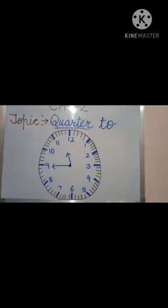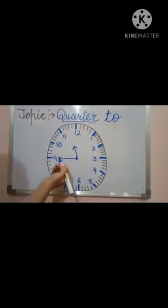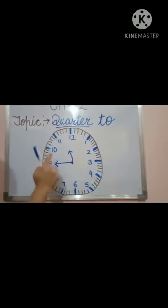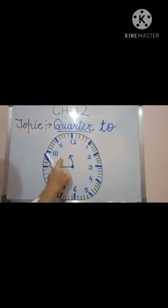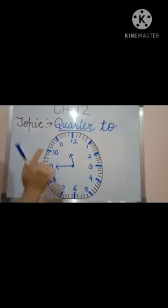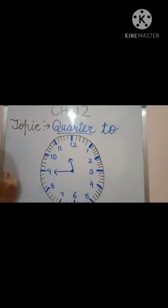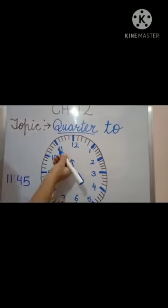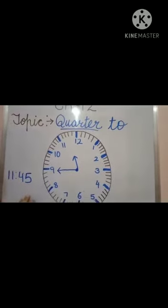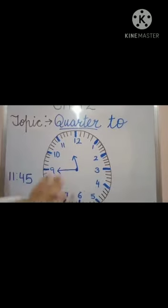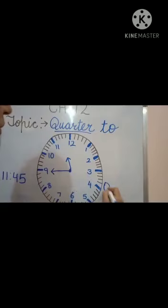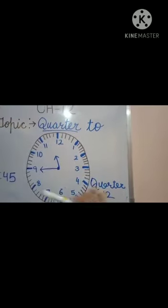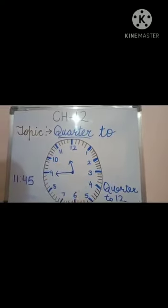Let us see one more example. The long hand is at 9 and the short hand is between 11 and 12. When we write the time in numbers — because after 11 o'clock 45 minutes have passed — we write 11:45. And when we write in words, that is 'quarter to 12,' meaning 15 minutes are still left from 12 o'clock.